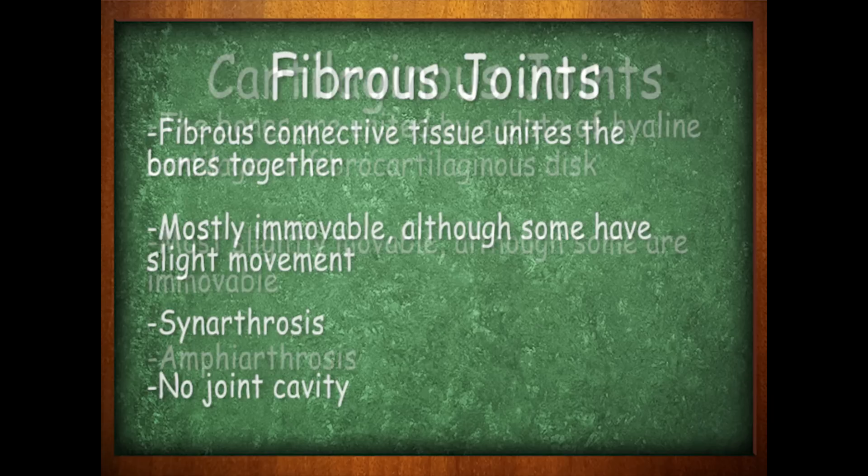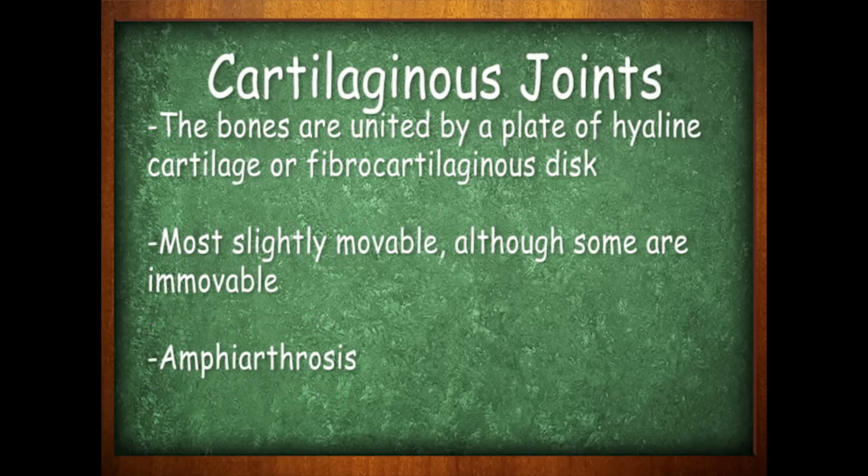The next type is cartilaginous. Cartilaginous joints are amphiarthrosis — there's some movement there. They are usually bound by cartilage.